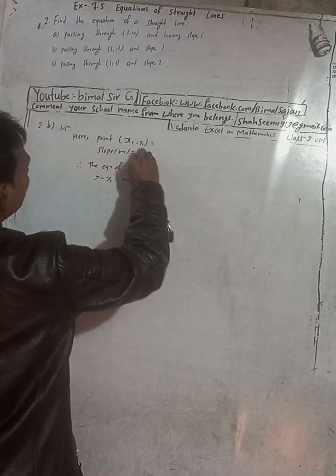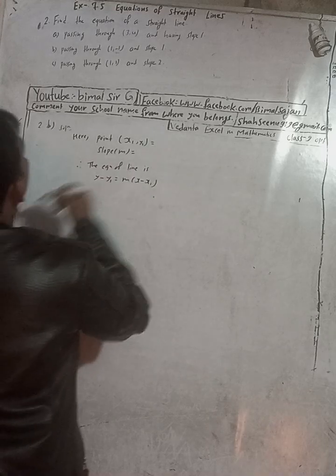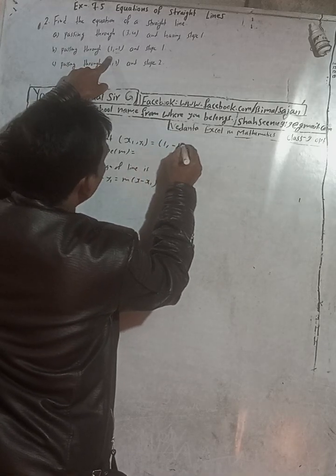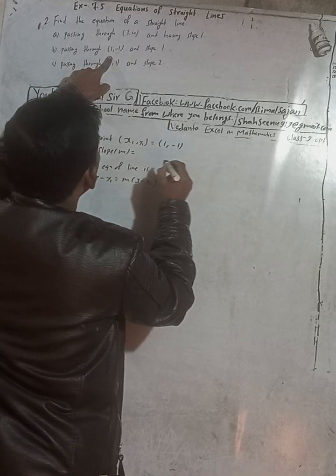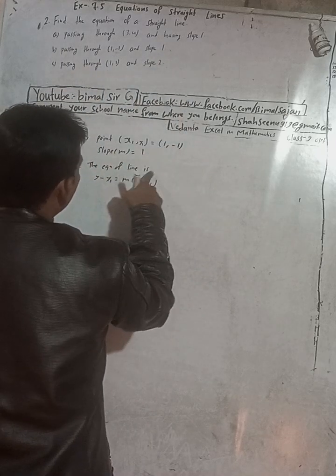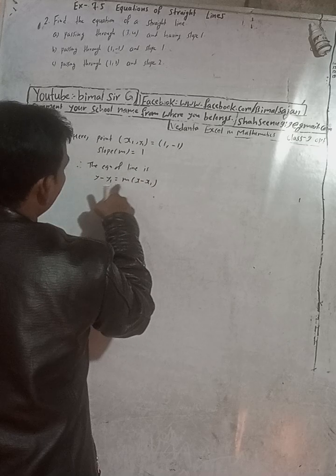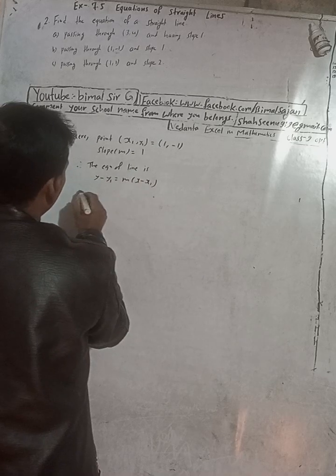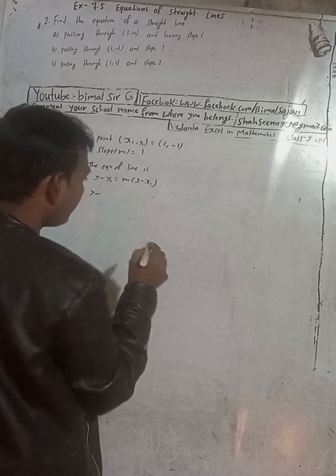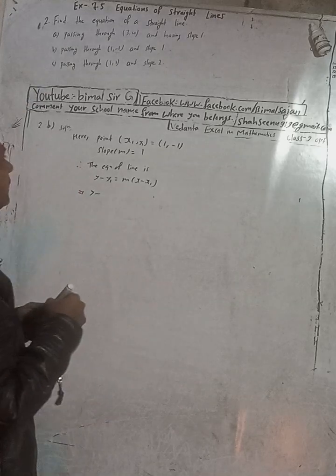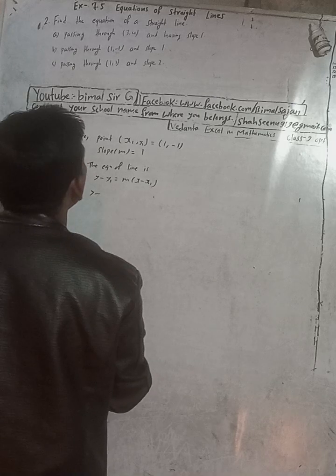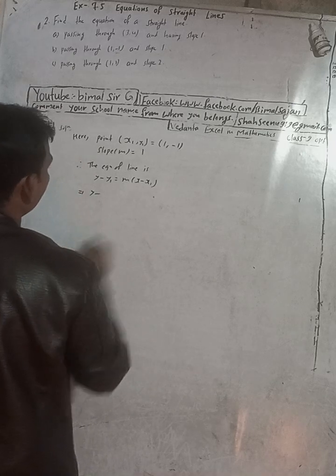Now part (b). Here the point (x1, y1) is (1, -1) and slope is again 1. The equation of line is the same: y minus y1 equals m into x minus x1. So I will solve it from the beginning.